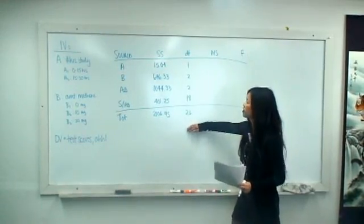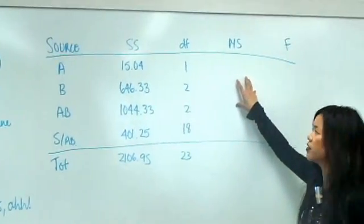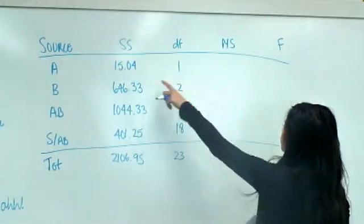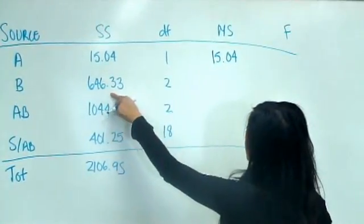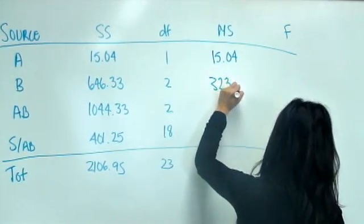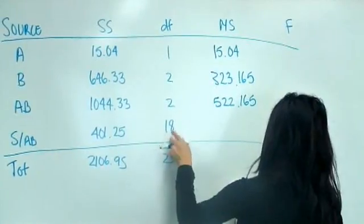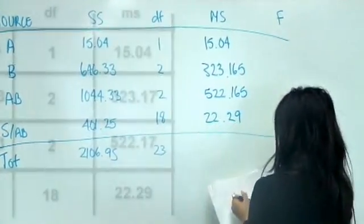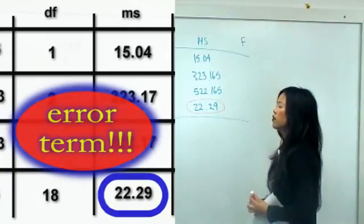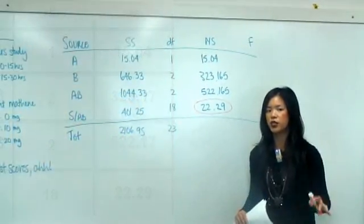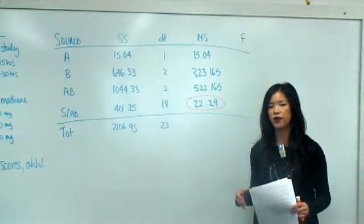We're back at the source table with sum of squares and degrees of freedom filled in. Mean square is simply SS divided by df — so 15.04 divided by 1 = 15.04, 646.33 divided by 2, and so on. Remember, in ANOVA, our error term is the MS within. We always want variance to come from between groups, not within groups — if all variance is within one group, you can't really say groups are significantly different.